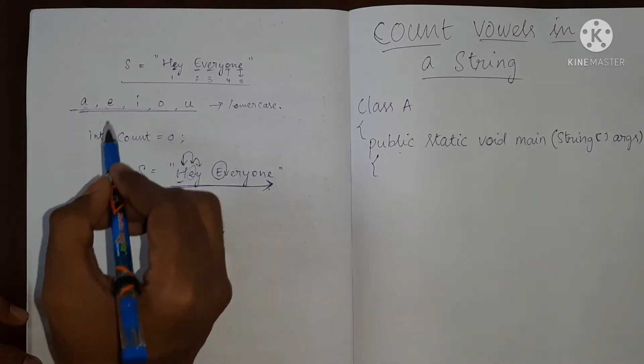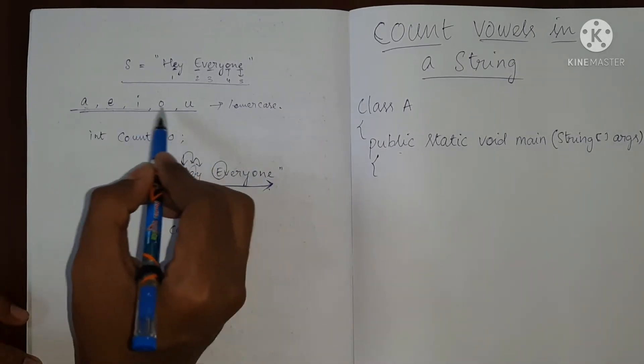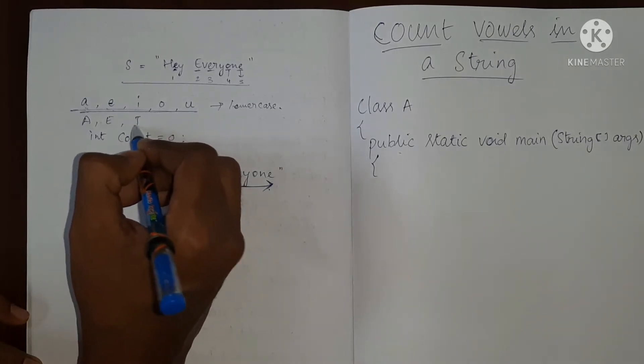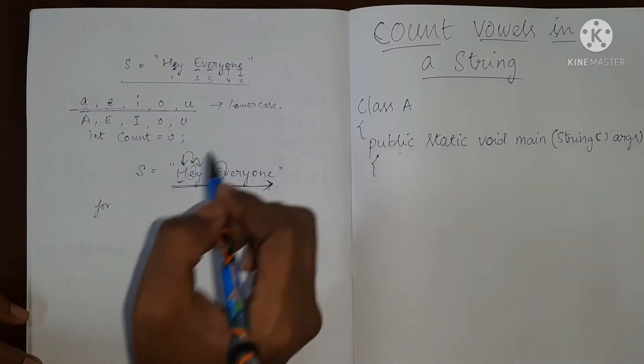So either you can do like this, you can check for A, E, I, O, U in lowercase and A, E, I, O, U in uppercase. This will be a little lengthy approach.